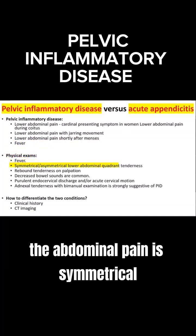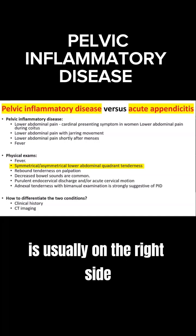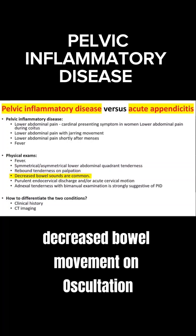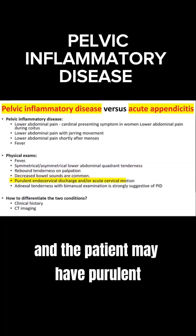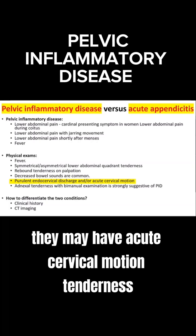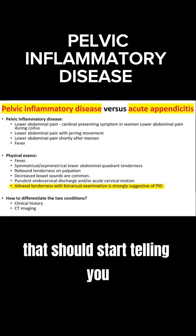On physical exam, the patient's temperature is elevated and the abdominal pain is symmetrical — unlike appendicitis, which is typically on the right side. Findings include rebound tenderness on palpation, decreased bowel sounds on auscultation, purulent endocervical discharge, acute cervical motion tenderness, and adnexal tenderness on pelvic exam.